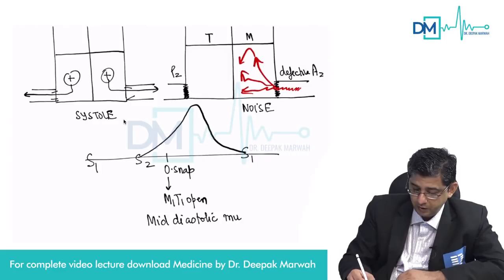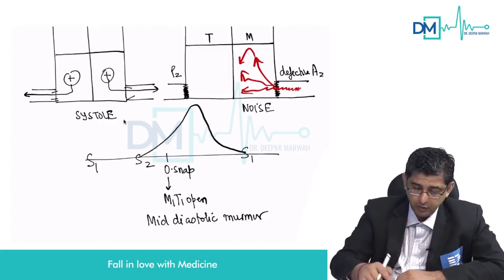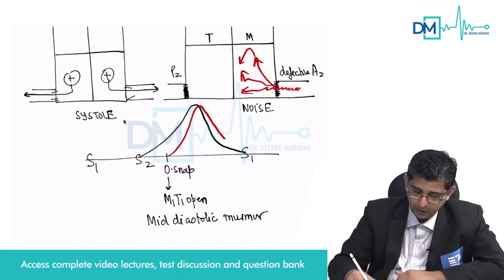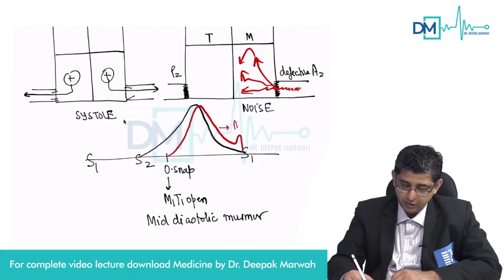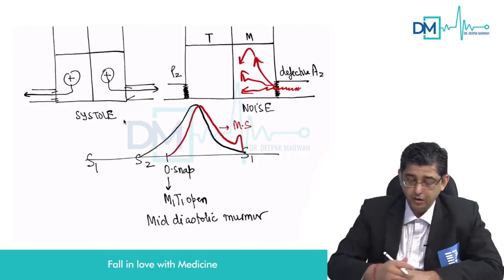It's called mid-diastolic because the maximum intensity is in the middle of diastole. Remember that the mitral stenosis murmur starts from the opening snap, peaks around mid-diastole, and then has a small secondary spike — a configuration different from the one described here.